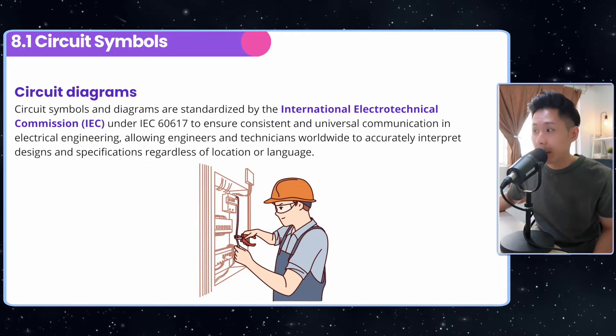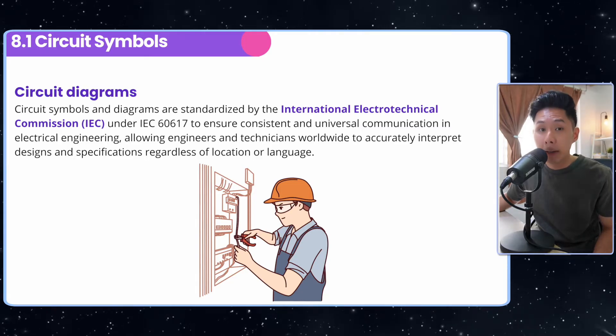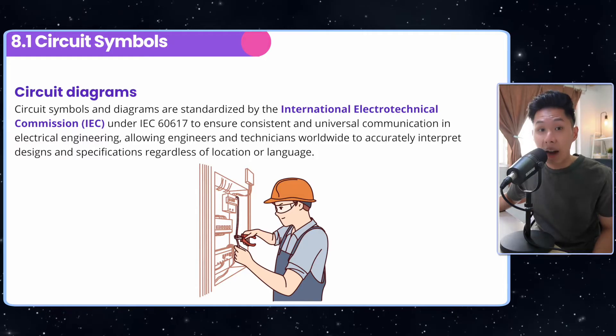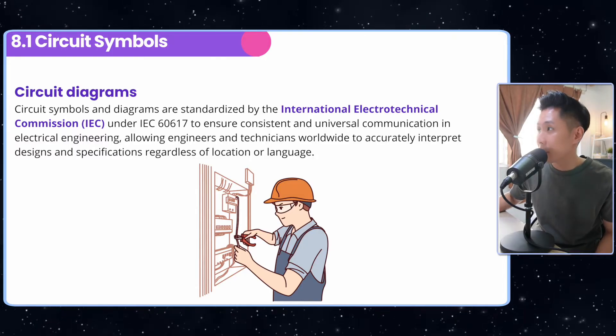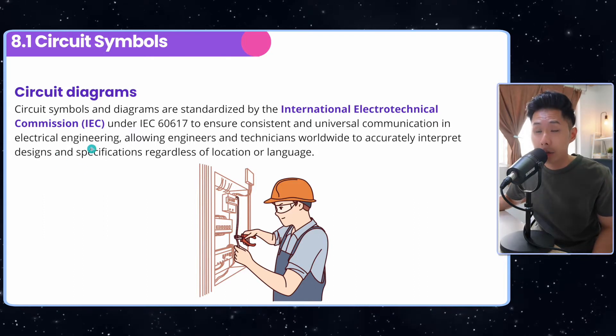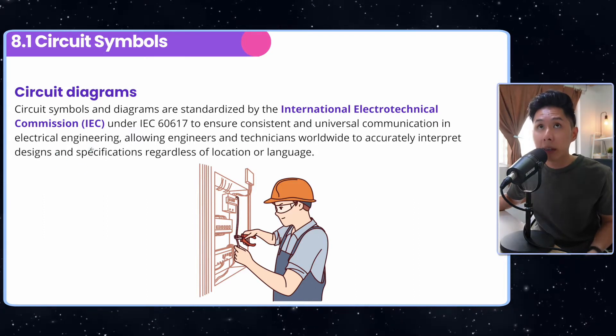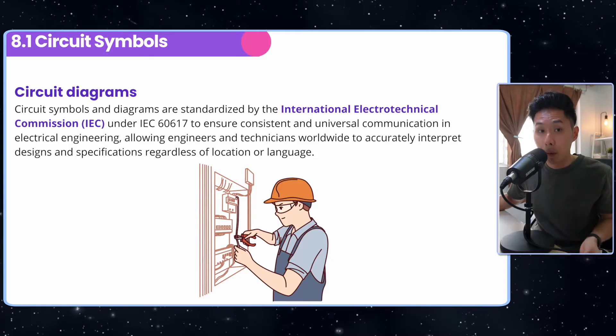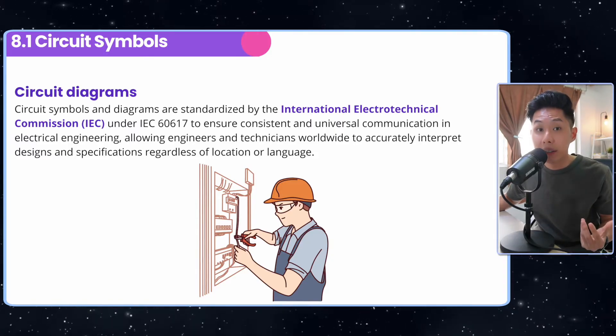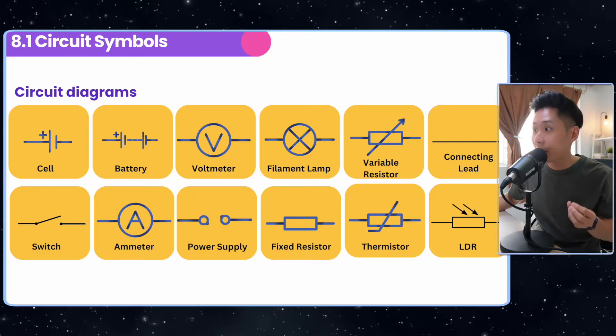The first one will be circuit symbols. So I'm pretty sure that you all are familiar with electrical circuit symbols, but you might not know that they are under this system called IEC. So this commission here ensured consistent and universal communication in electrical engineering. It ensures that everybody is using the same symbol for the same component so that communication can be done more easily. So these are all the symbols that you need to know.